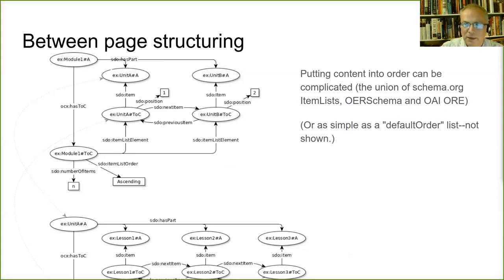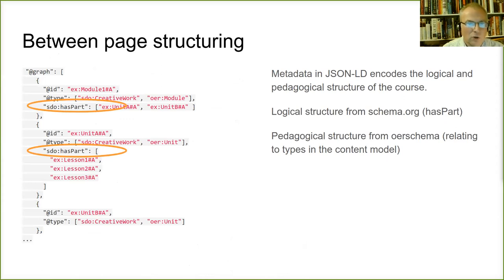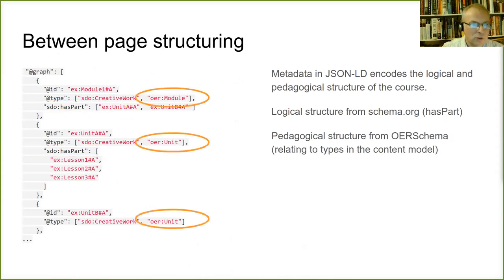I'm not sure if this is a baroque beauty or a gothic monstrosity, but it's certainly complex, and only feedback from implementation will tell us whether it's been over-engineered — because there is an alternative, which is just to use a simple default ordered list. An example of between-page structuring shown as JSON-LD shows that the logical structure comes from the schema.org 'hasPart' property, and the pedagogic structure comes from the OER Schema types, which relate individual parts back to the content model.